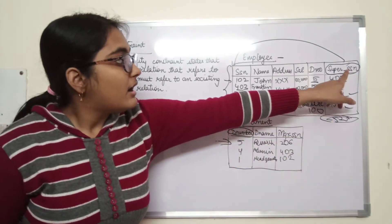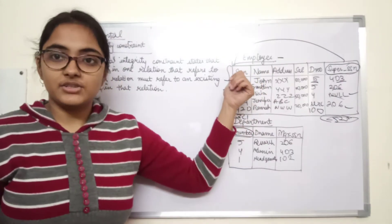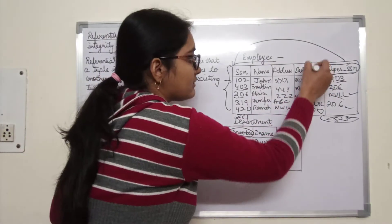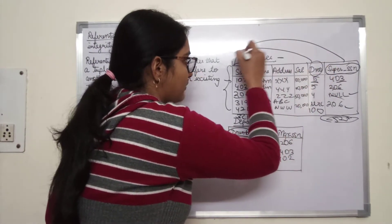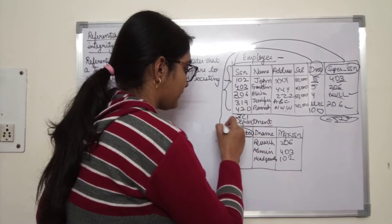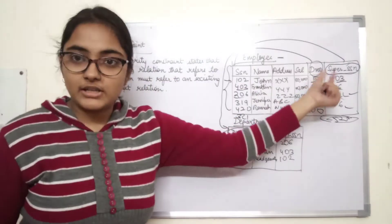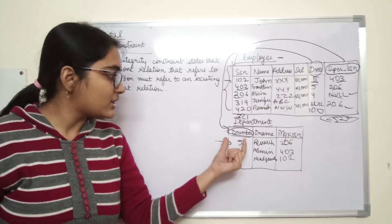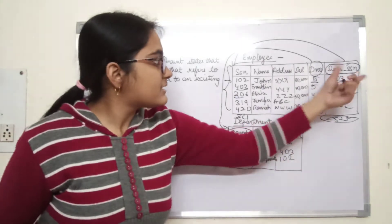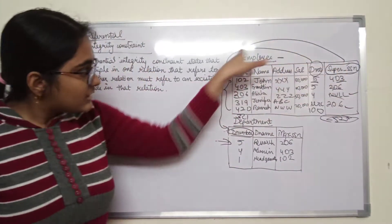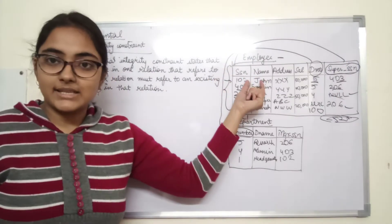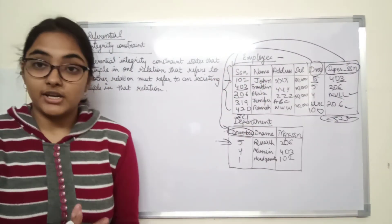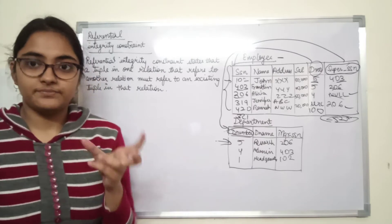So a foreign key can refer to the same relation itself — it need not always reference another relation. D number is the foreign key referring to the department relation, and super SSN is a foreign key referring to its own employee relation via the SSN attribute.